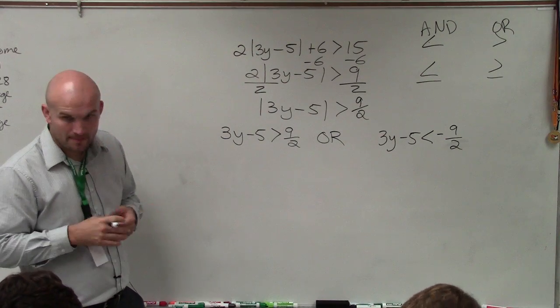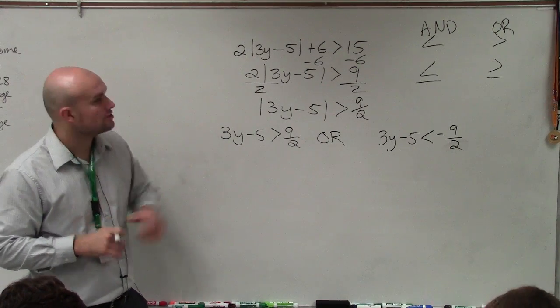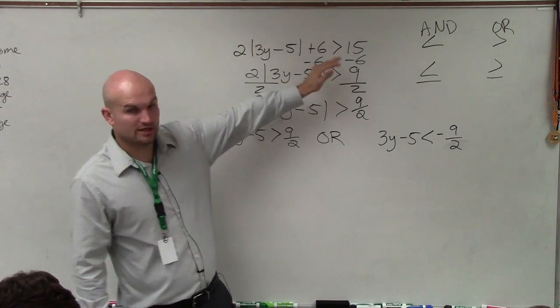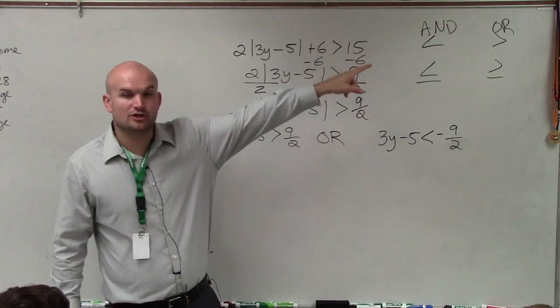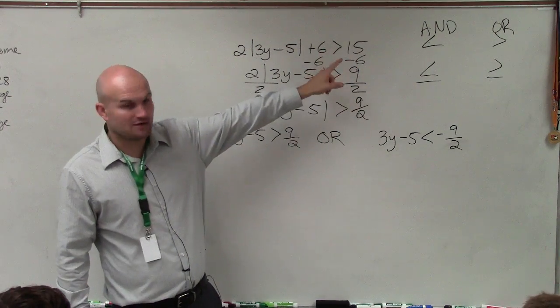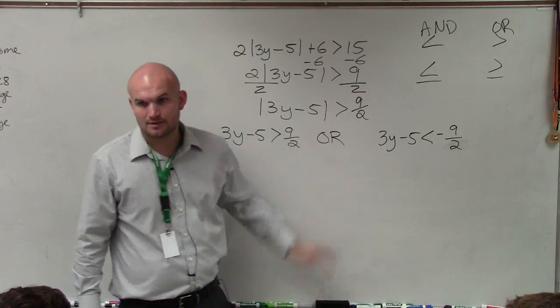So this is an OR inequality. So you're going to want to make sure you write that in, so you don't make a mistake when you graph it. So when you have your original inequality, if it's greater than or greater than or equal to, you're going to create an OR compound inequality. If it's less than or less than or equal to, then when you set up your two cases, it's an AND, and you write AND.